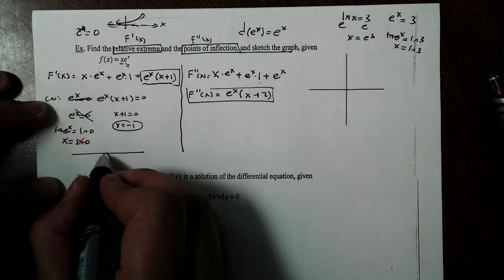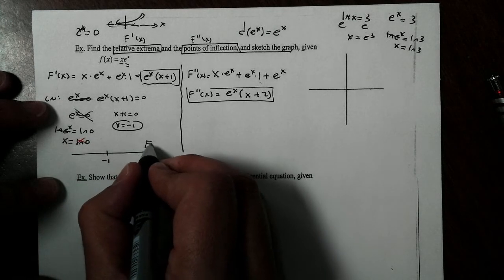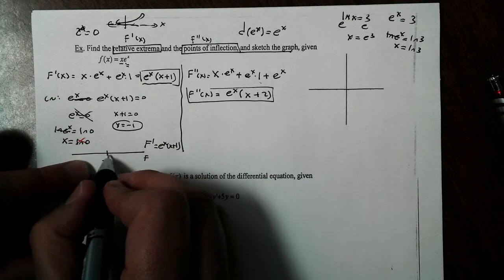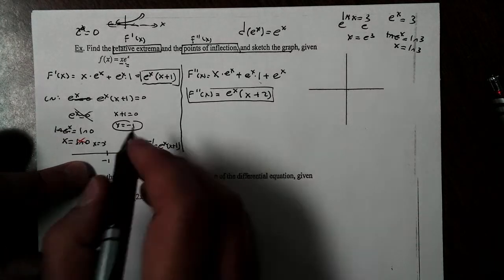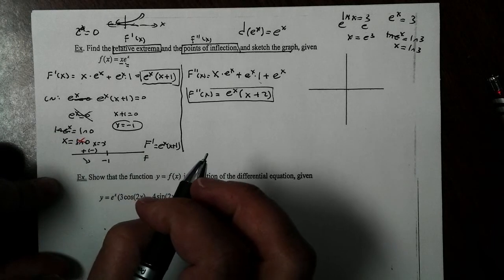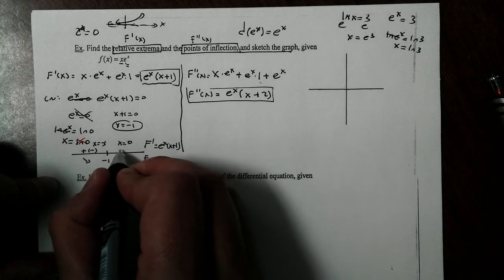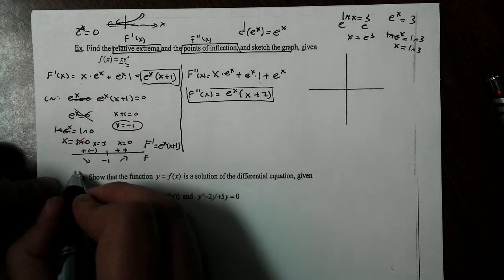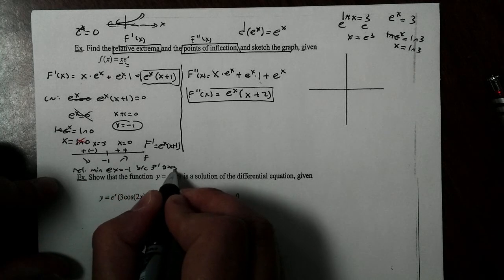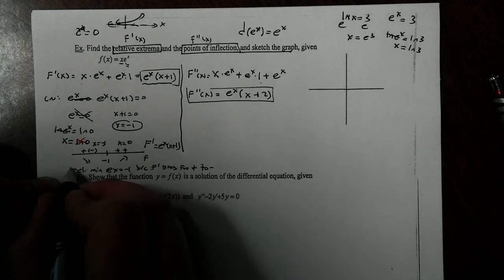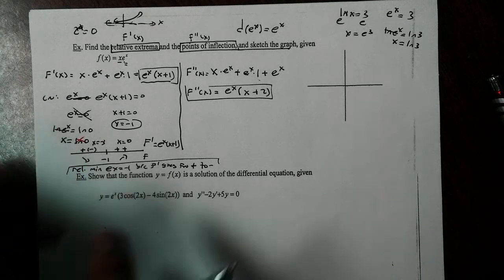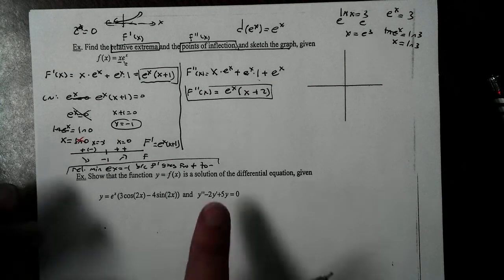Setting up the sign chart with negative one as the critical number for f prime: picking x equals negative three, e to the negative three is positive and negative three plus one is negative, so the function is decreasing. Picking x equals zero, e to zero is positive and zero plus one is positive, so it's increasing. Therefore we have a relative minimum at x equals negative one. Remember, the sign chart is about 40% of your AP test — we've been seeing this almost daily since October.